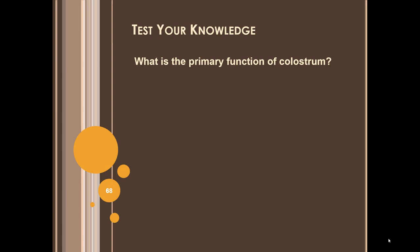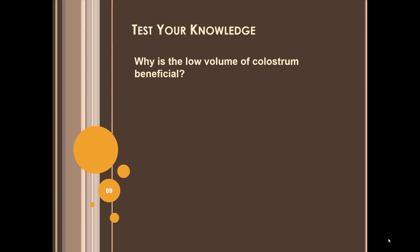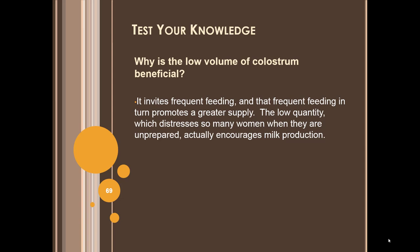Test your knowledge: What is the primary function of colostrum? Protective — it offers immunity to the baby in a variety of forms. Why is the low volume of colostrum beneficial? Because it invites frequent feeding, and that frequent feeding in turn promotes a greater supply.